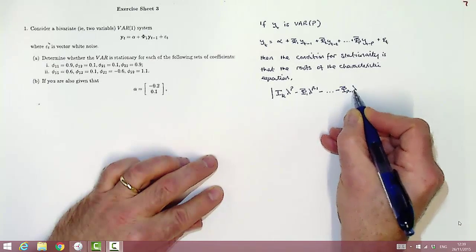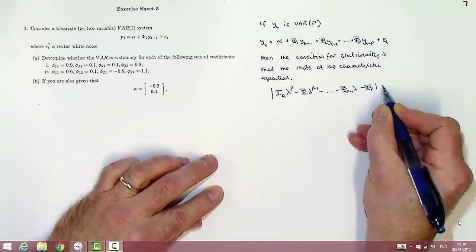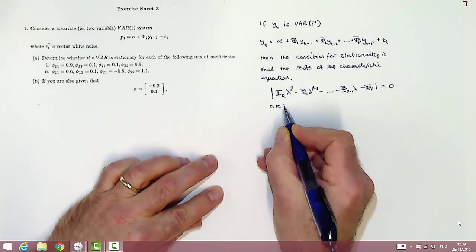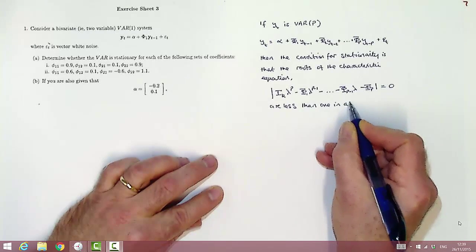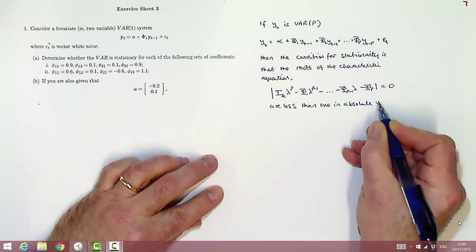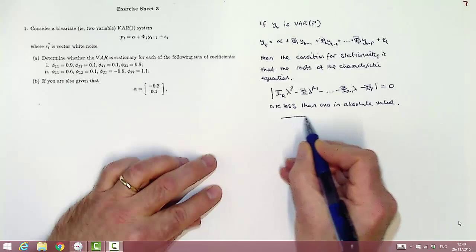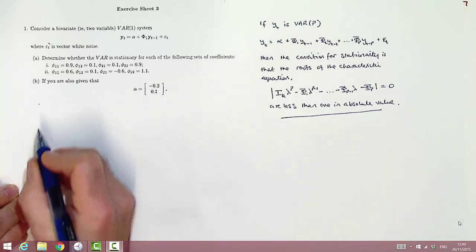So there's the characteristic equation. It's the determinant of that expression set equal to 0, and we find the values that satisfy that equation of lambda, known as the roots of the equation. And they must be less than 1 in absolute value for it to be stationary.